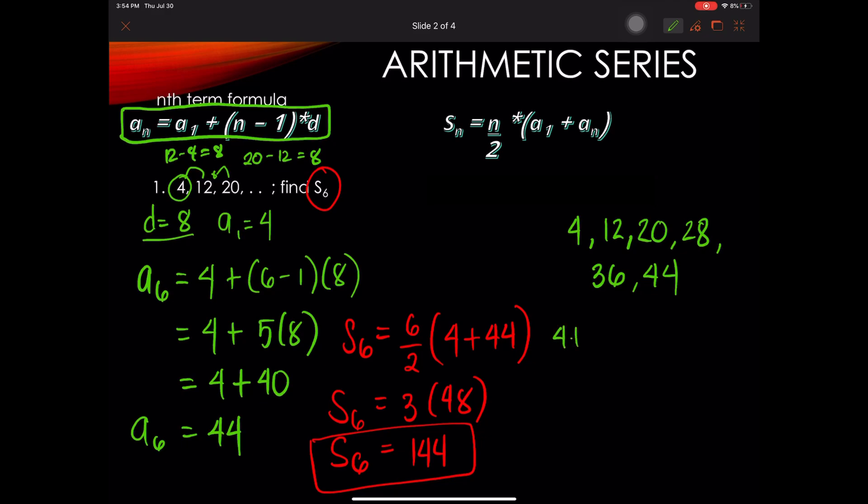So if we add all of this, 4 plus 12 plus 20 plus 28 plus 36 plus 44, we are going to get 144.